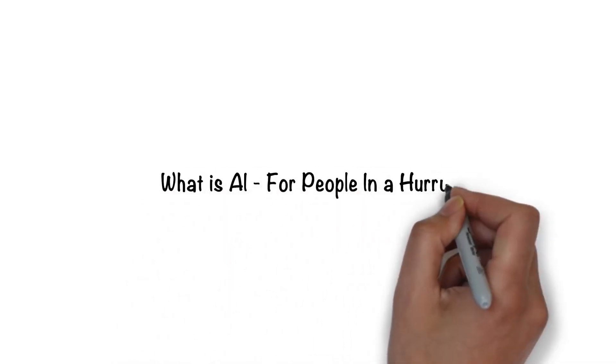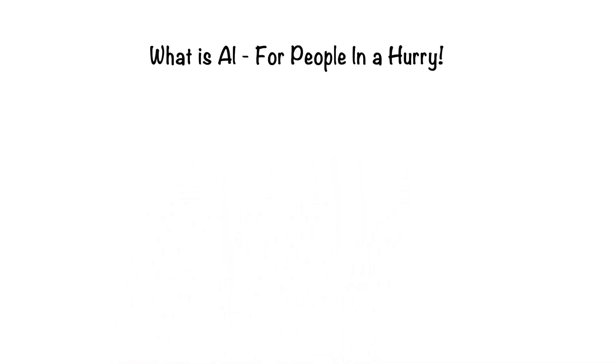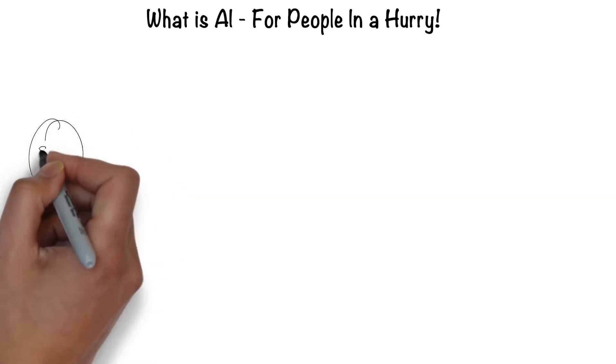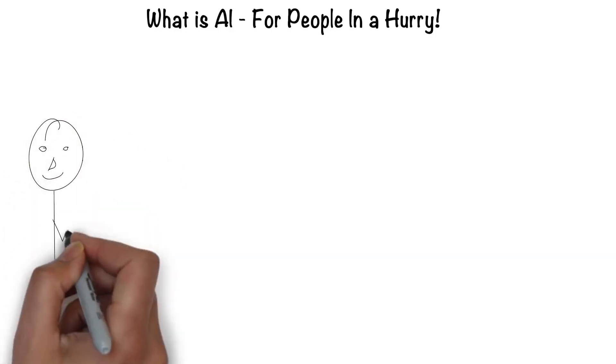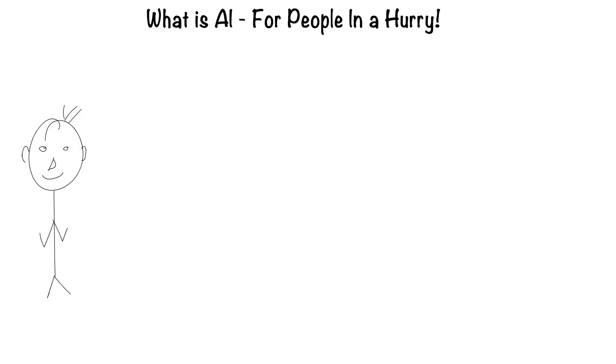Artificial intelligence for people in a hurry. The easiest way to think about artificial intelligence is in the context of a human. After all, humans are the most intelligent creatures we know of.